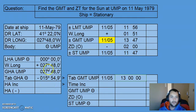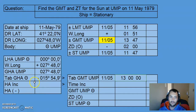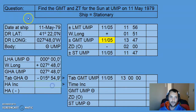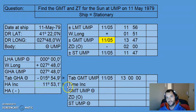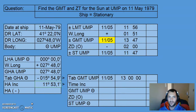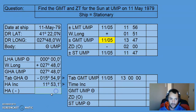The increment is the GHA minus the tabulated GHA. So we subtract 15°54.9' from 27°48', and that gives us an increment of 11 degrees 53.1 minutes. There are no additional corrections to apply — it's just GHA, the increment, and then applying the longitude gives us the LHA. We've essentially done the sight reduction in reverse.